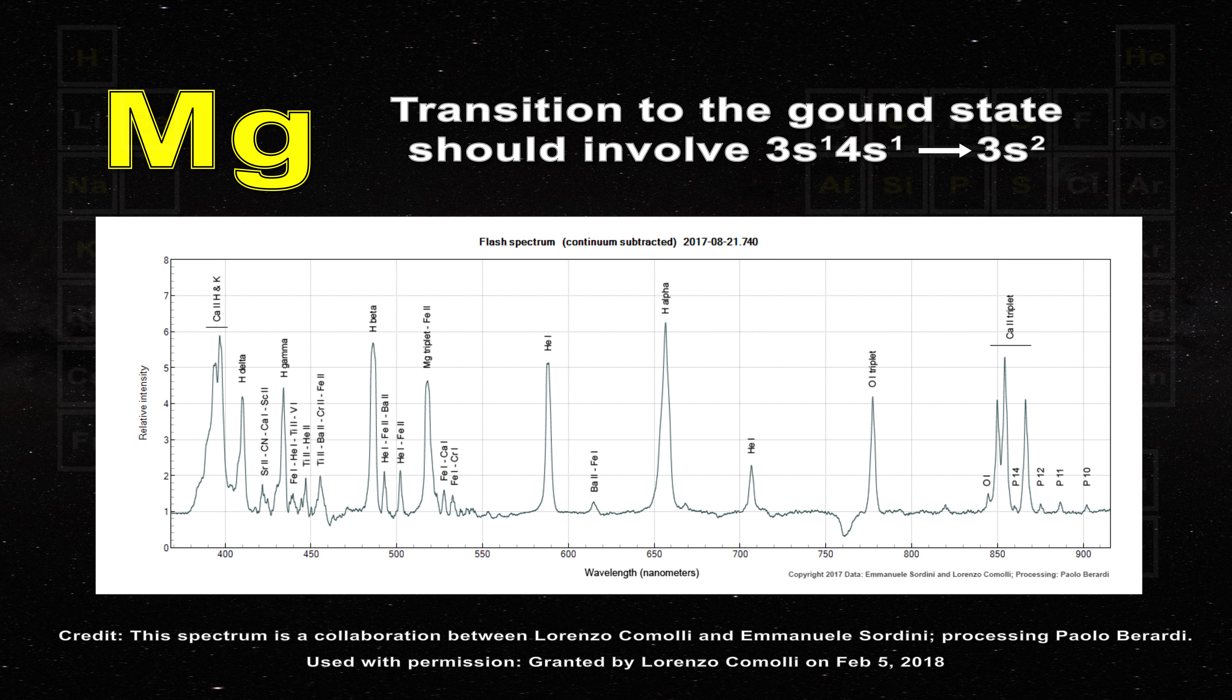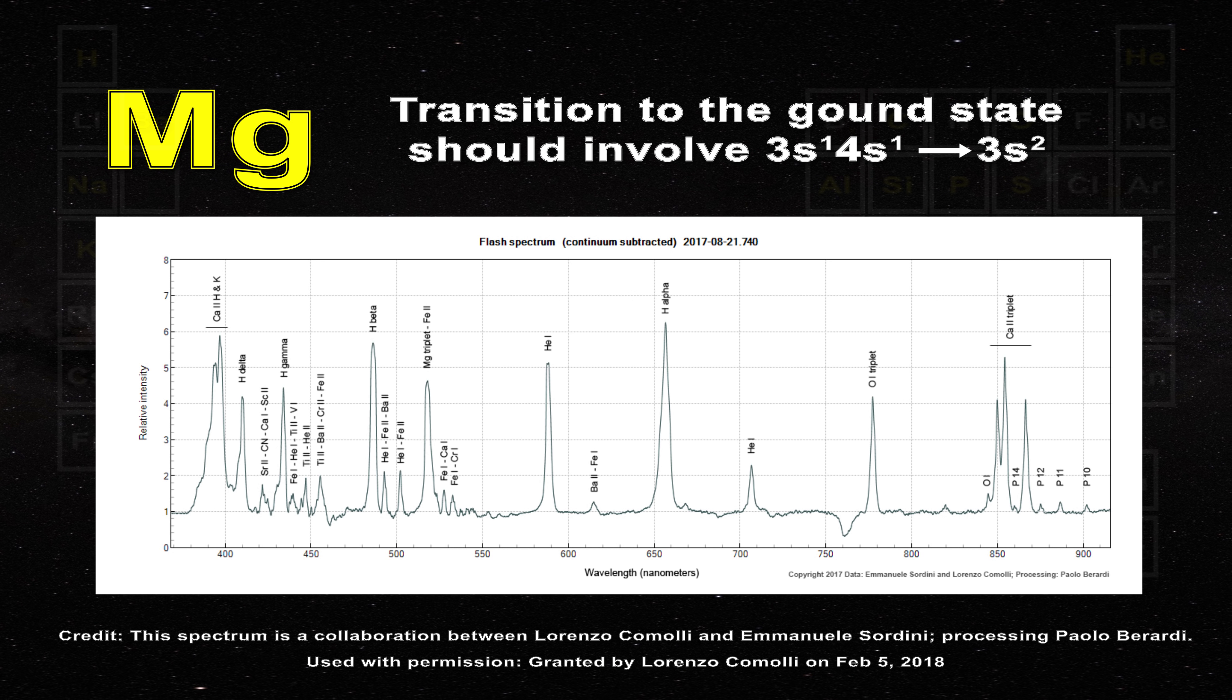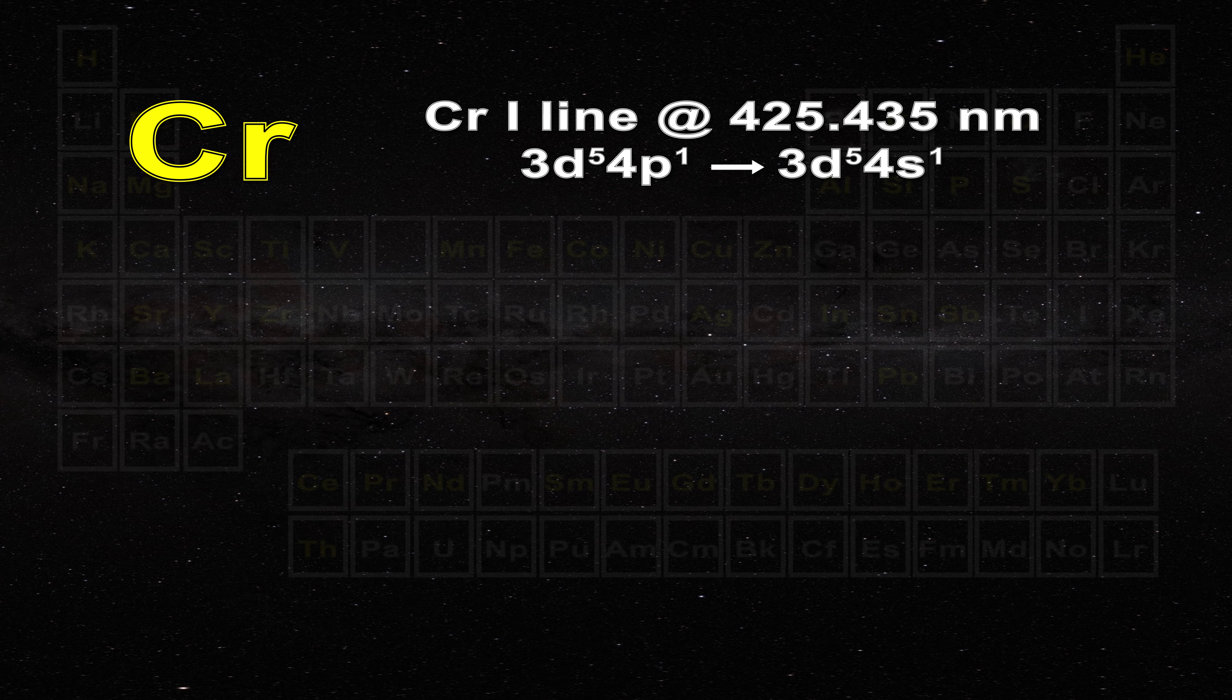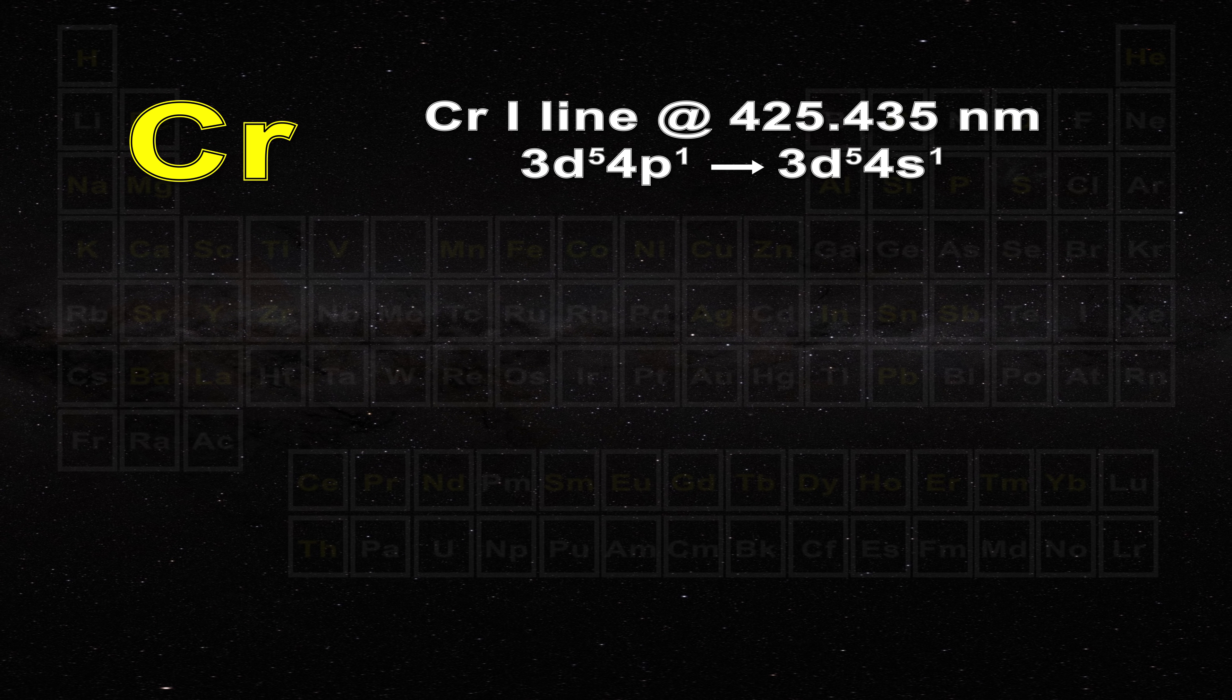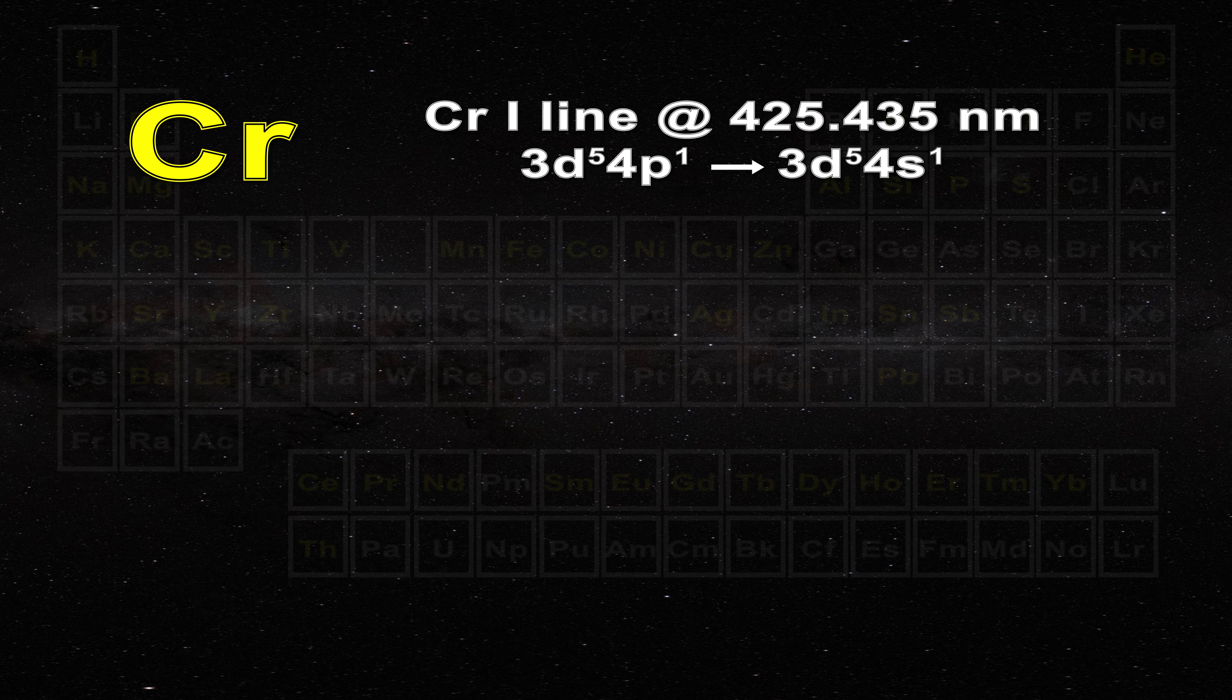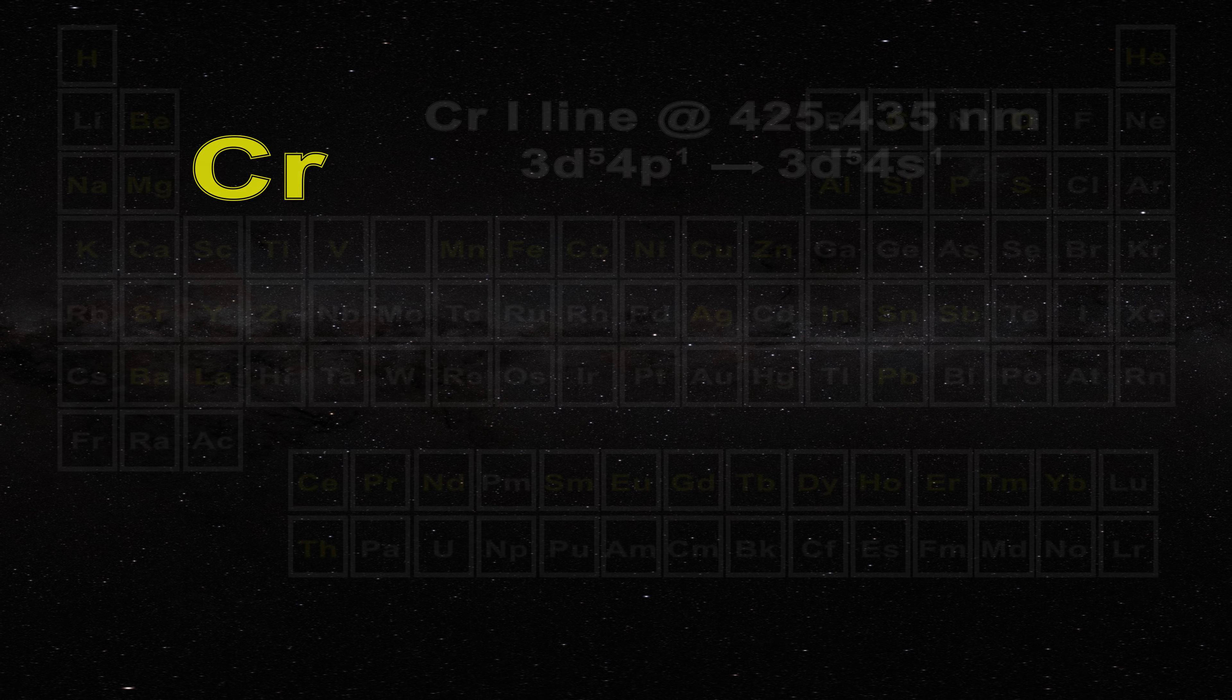Conversely some of the atoms have emission lines where the ground state of the transition is the true ground state of the atom. An example would be the chromium line at 425.435 nanometers. It involves a transition from the 3d5 4p1 state to the 3d5 4s1 state which is the ground state of the atom. But note that a single unpaired electron is involved even for this ground state. So one has to ask why are the strong oxygen and magnesium lines not formed by also returning to the ground state with paired electrons?